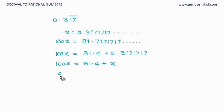x goes that side becomes 99x. 99x is equal to 31.4 and therefore x is equal to 31.4 upon 99. Or I can write this as 314. I will multiply this here 10. So I have to multiply in denominator also by 10 on 990.